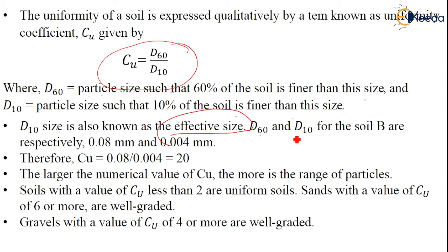The D60 and D10 sizes for soil B are respectively 0.08 and 0.004 mm. Cu is calculated as 0.08 by 0.004 mm, which equals 20. The larger the numerical value of uniformity coefficient, the more is the range of the particles. Soils with a value of Cu less than 2 are known as uniform soils. Sands with a value of Cu of 6 or more are well graded. The gravels with a value of Cu of 4 or more are known as well graded. These ranges should be remembered and are very important.